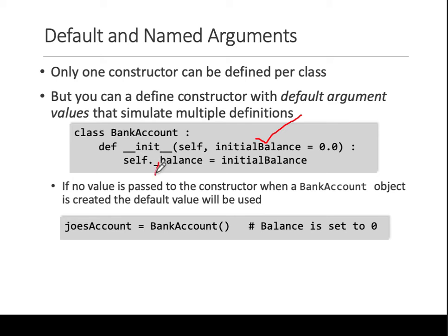What's happening inside is that you're setting self.balance (or _balance) to whatever initial_balance is. If a value was provided, that value will be used; if no value is provided, it defaults to zero. So balance is the member variable of this class. initial_balance is just a parameter — not a member of the class. The member of the class is whatever is being set inside the constructor.